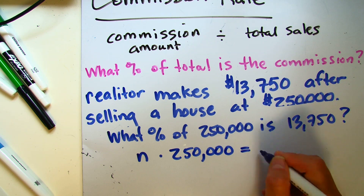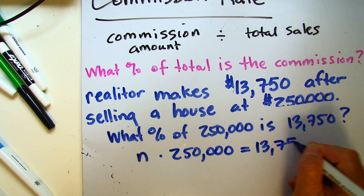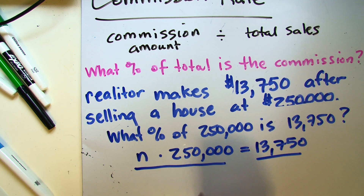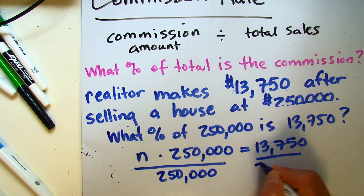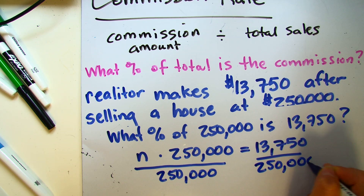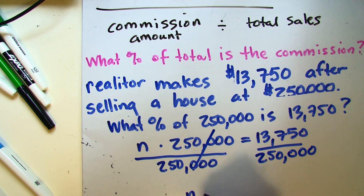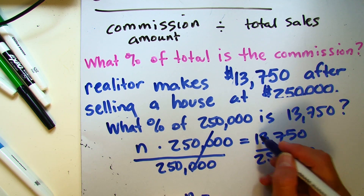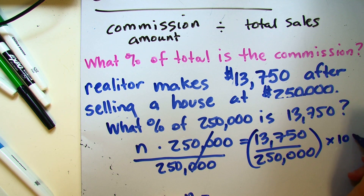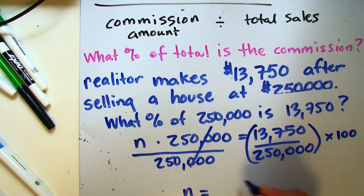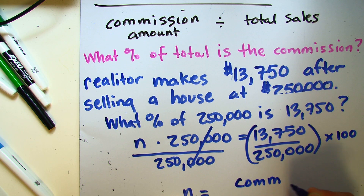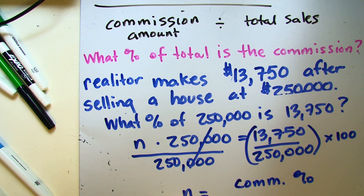This can be translated to n times two hundred fifty thousand equals thirteen thousand seven hundred fifty. When solving for n, we always want to isolate it. Because we're multiplying n by two hundred fifty thousand, we want to divide by two hundred fifty thousand on both sides. This will cancel out and we're left with n. Once we do this division, we're going to multiply this amount by 100 and that will give us our commission percent.